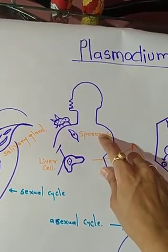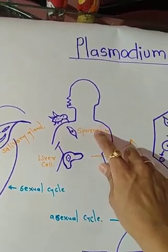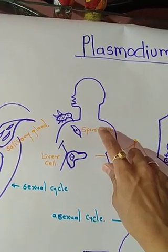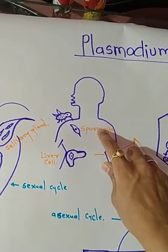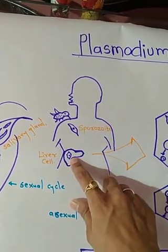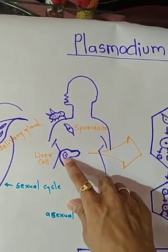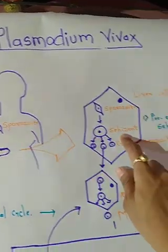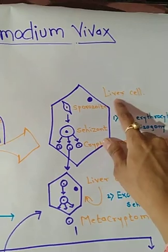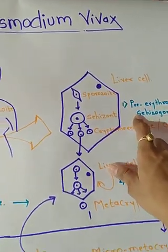The sporozoite of Plasmodium vivax enters into the bloodstream of the human. It first targets the liver cell, inserts into the liver cell, and undergoes asexual reproduction. Let us zoom out the liver cell and study it in brief.